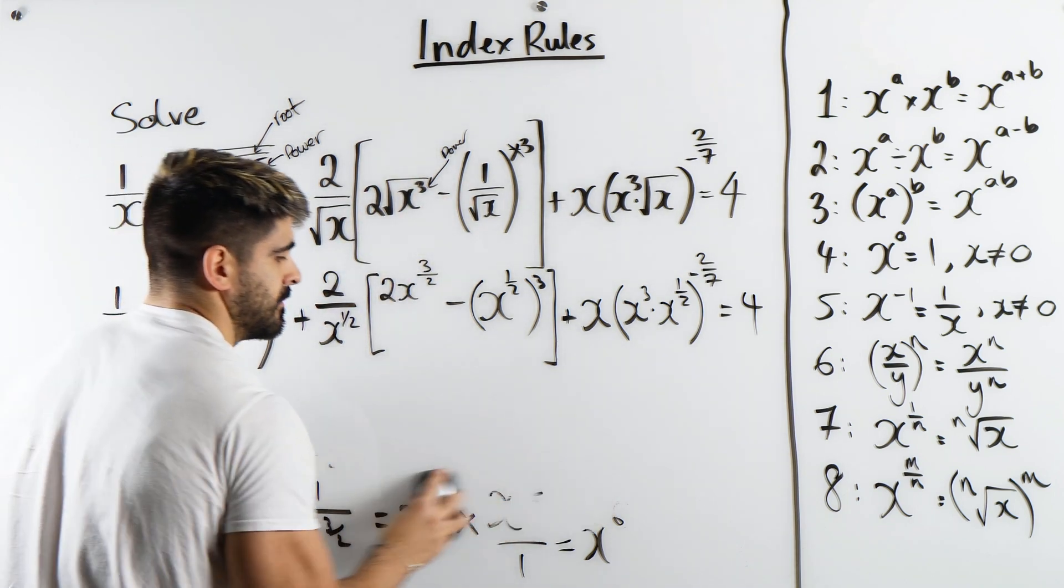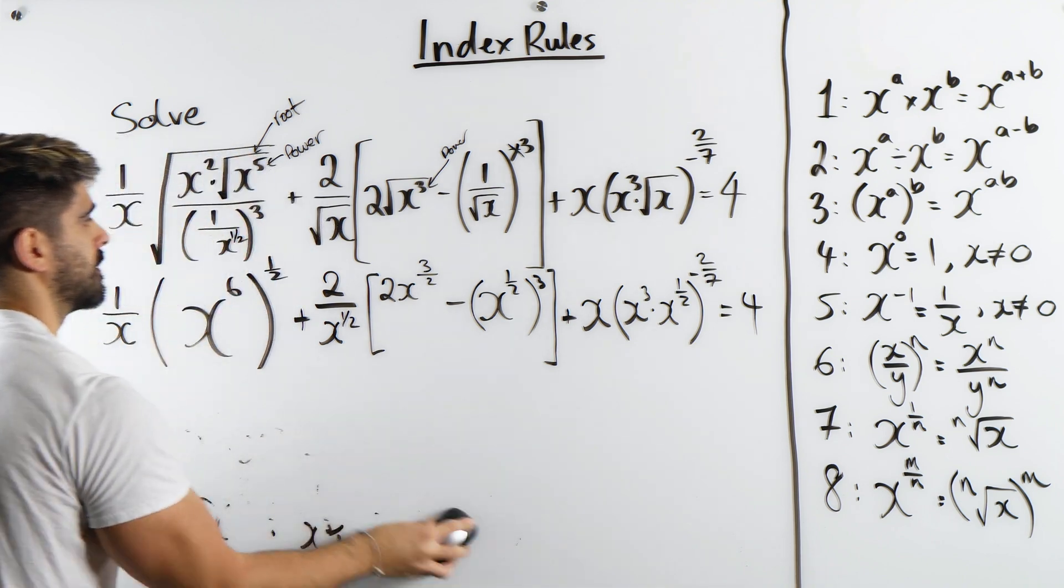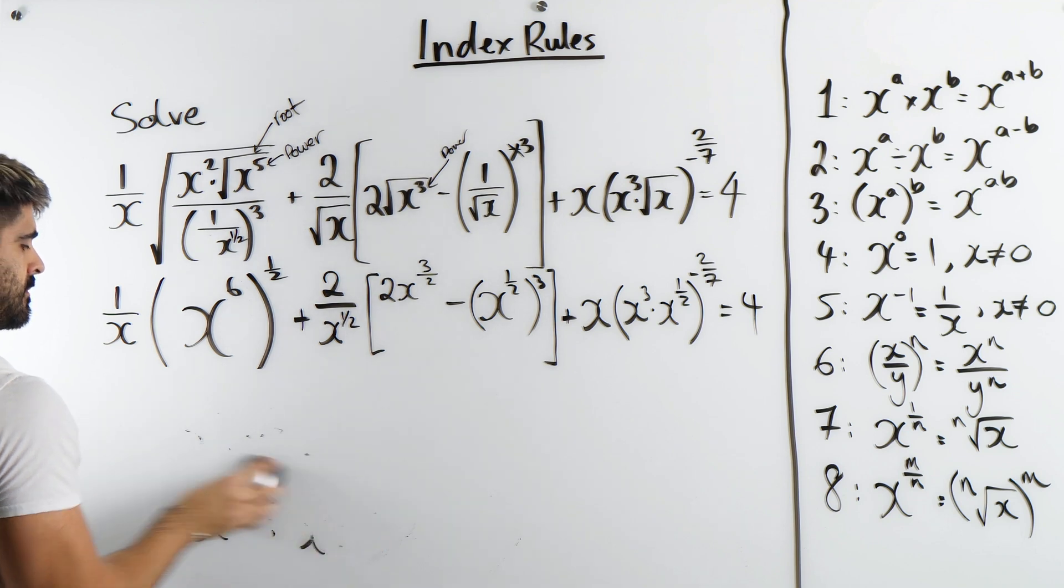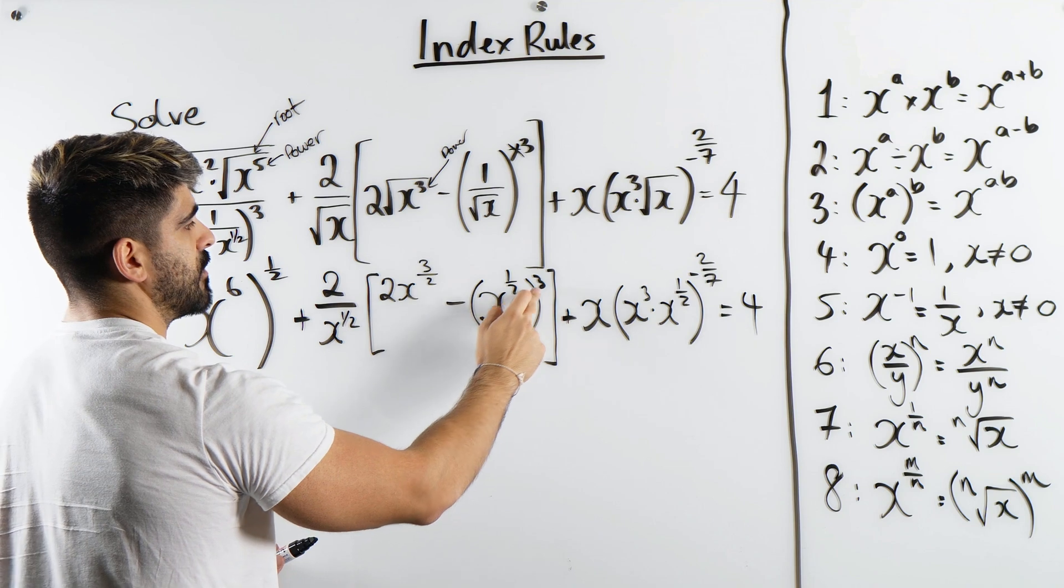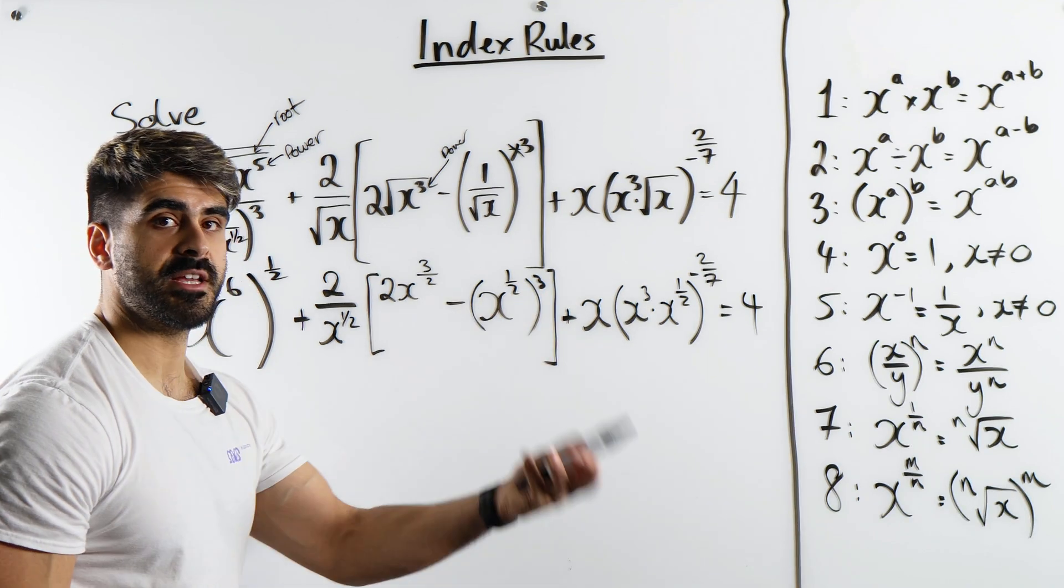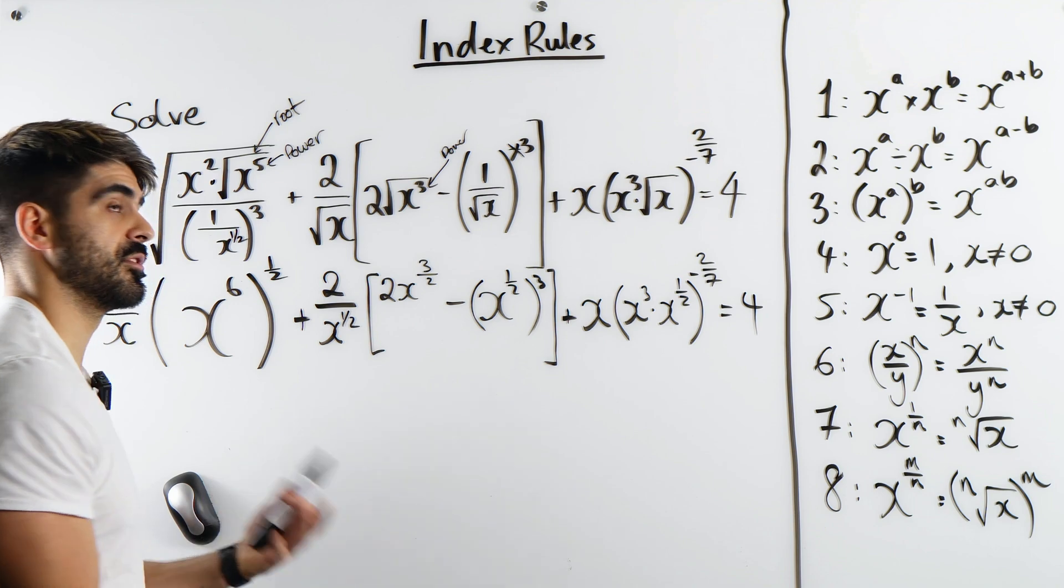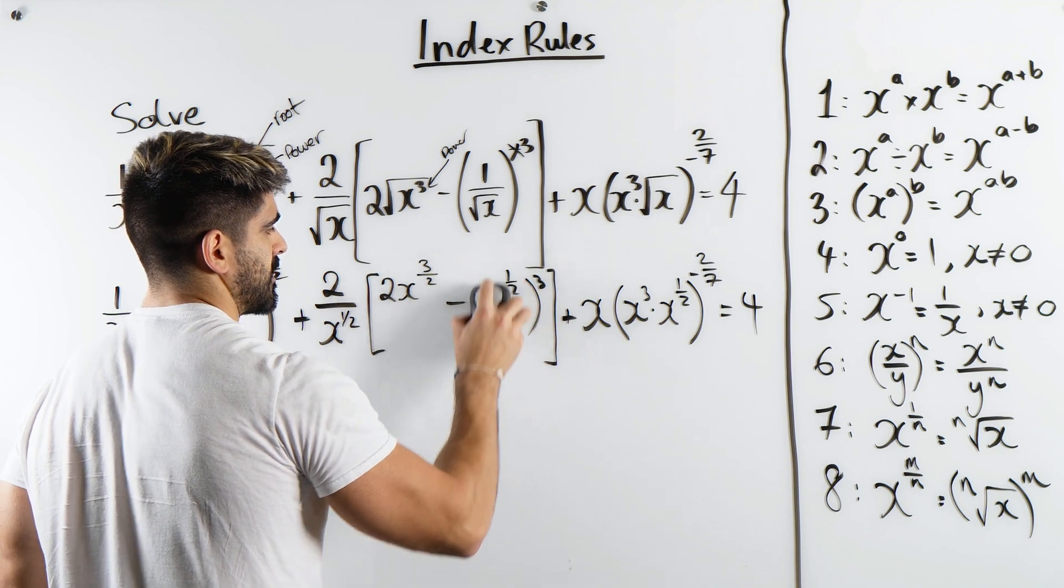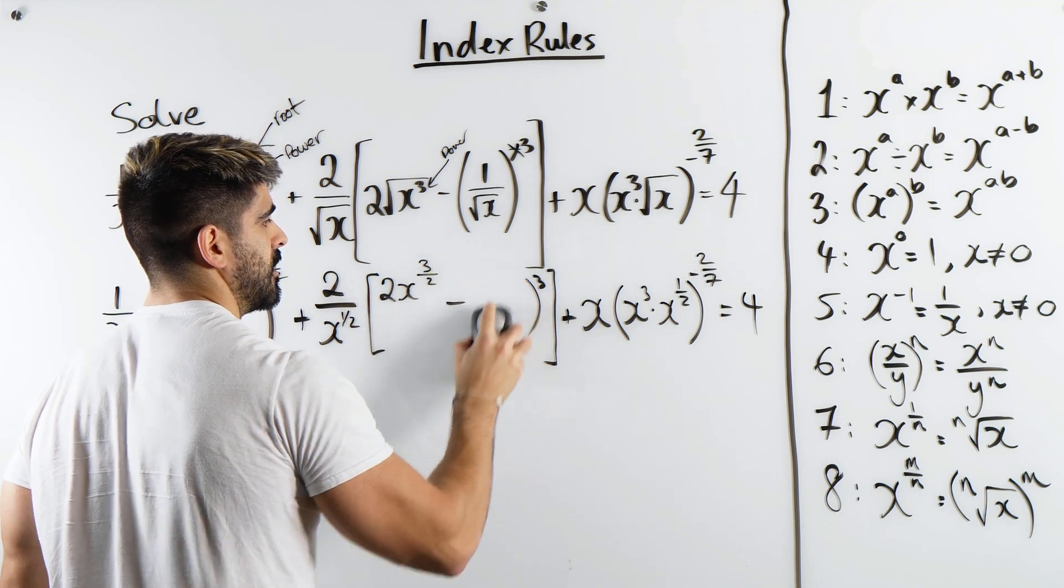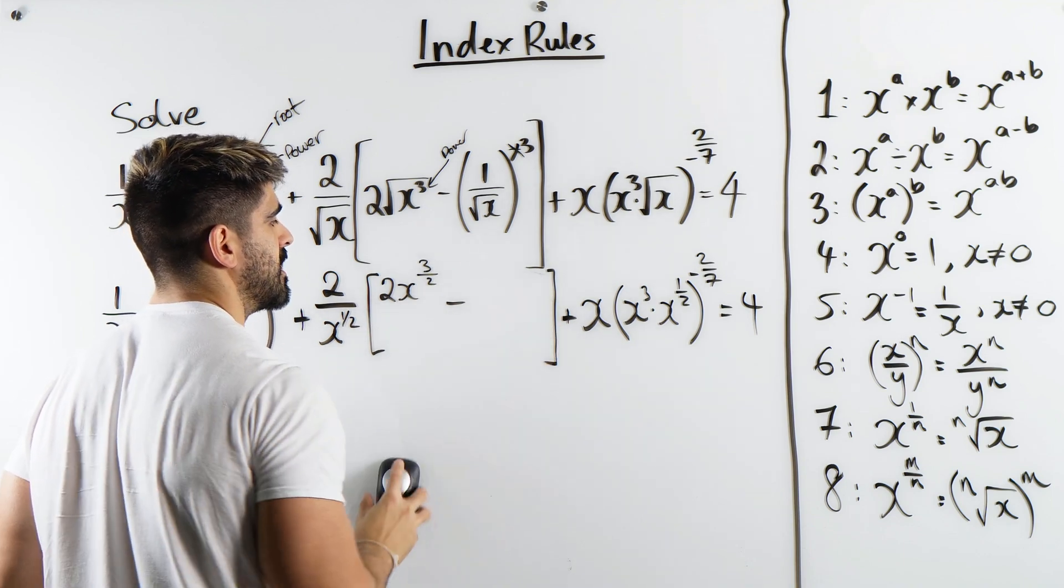Now, the next thing is, over here, we can apply the same rule. In fact, the same rule that I want to apply here. So, I have a number raised to a power raised to another power. We're going to multiply those powers. A half times 3 is just 3 over 2. 3 over 2, not 3 and a half, that's something different. So this is x to the power of 3 over 2, which is really nice actually.